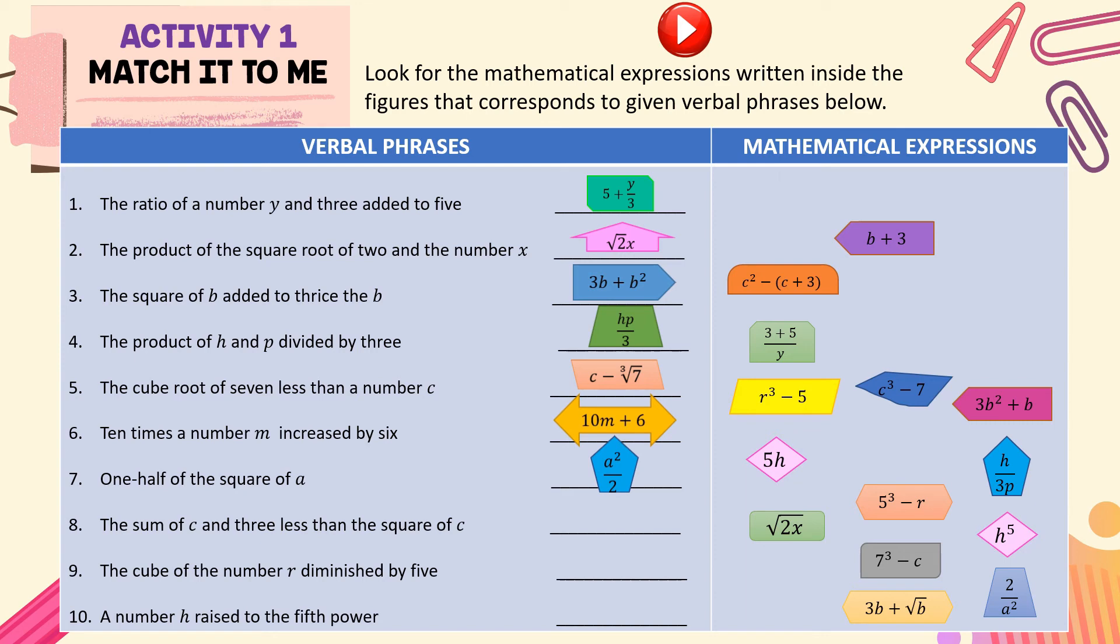For number 8, the sum of C and 3 less than the square of C can be written as C squared minus the quantity of C plus 3. For number 9, the cube of the number R diminished by 5 can be written as R cubed minus 5.